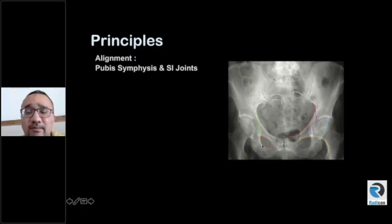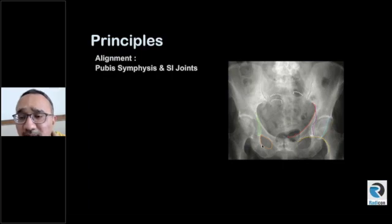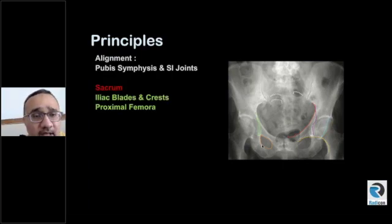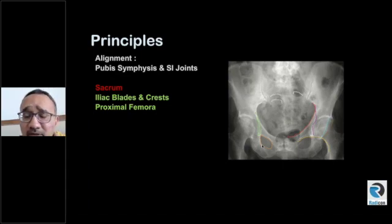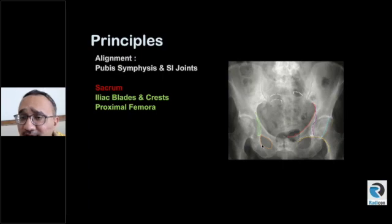These are important tips and landmarks to help us identify any subtle abnormality. When you look at the sacroiliac joints, don't forget the sacrum — the sacrum is a review area. Pathologies can hide in the sacrum; there could be overlying bowel, but always look at both sides of the sacrum to check for any asymmetry or lesion. Moving laterally, go to the iliac blades and iliac crest, because things can also get hidden there.